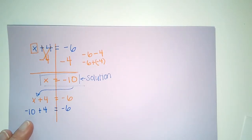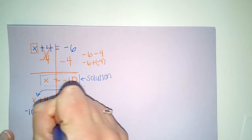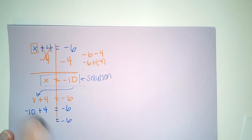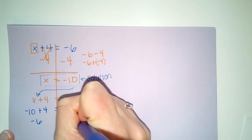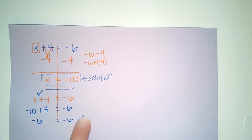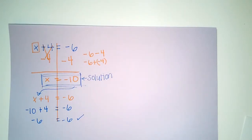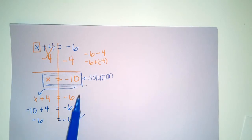Does -10+4=-6? -10+4 does equal -6. So my solution is correct. This is my correct solution. We do want to make sure we check our work. This is the evidence proving that we have correctly solved for our x.